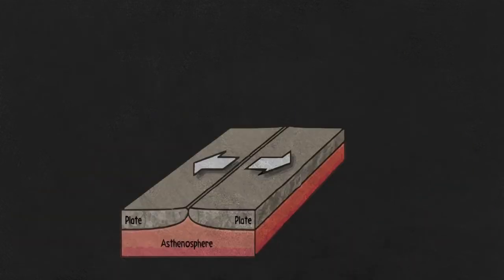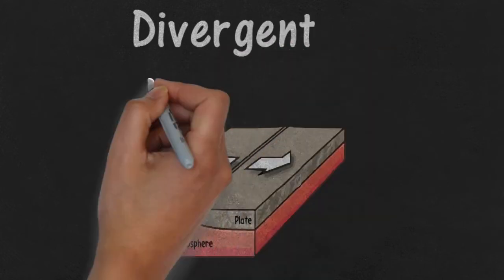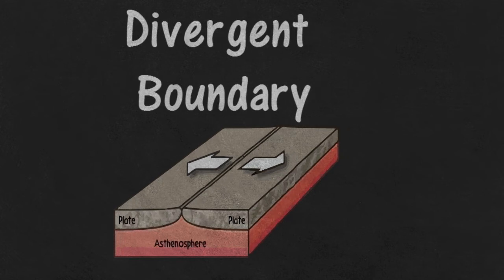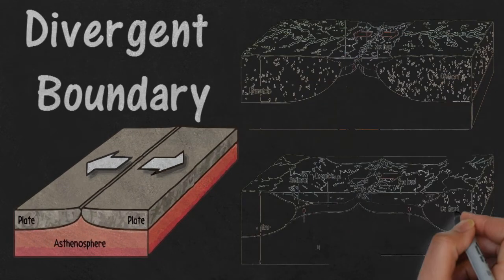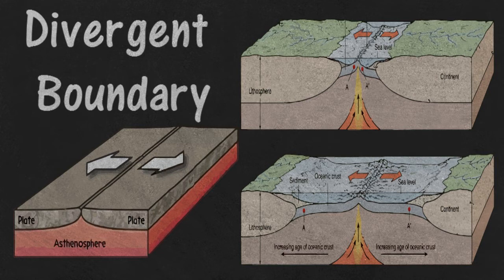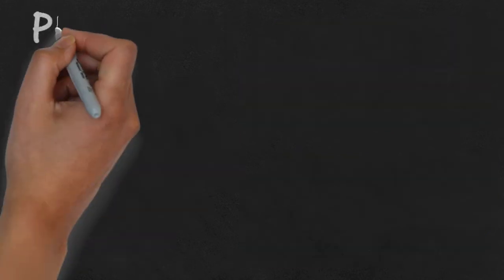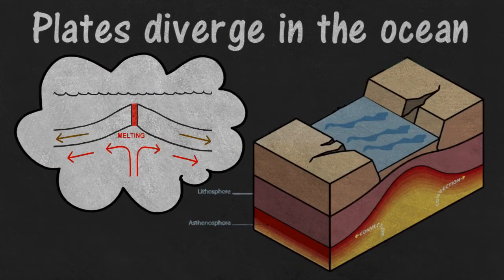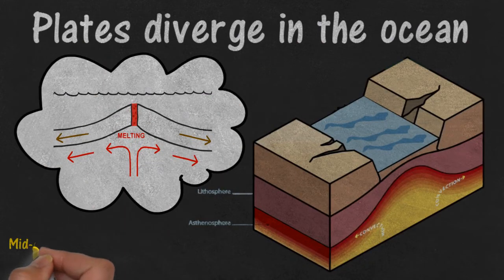The opposite of a convergent boundary is a divergent boundary, where two plates pull apart and split. It happens when magma from deep within the earth pushes up on the bottom of the lithosphere, lifts it, and flows sideways underneath it. The sideways flow of the magma causes the plates above to be dragged in the direction of the flow. Pretty soon, the plate breaks and pulls apart. Now, when this happens in the ocean, the end result can be underwater mountain ranges called mid-oceanic ridges.